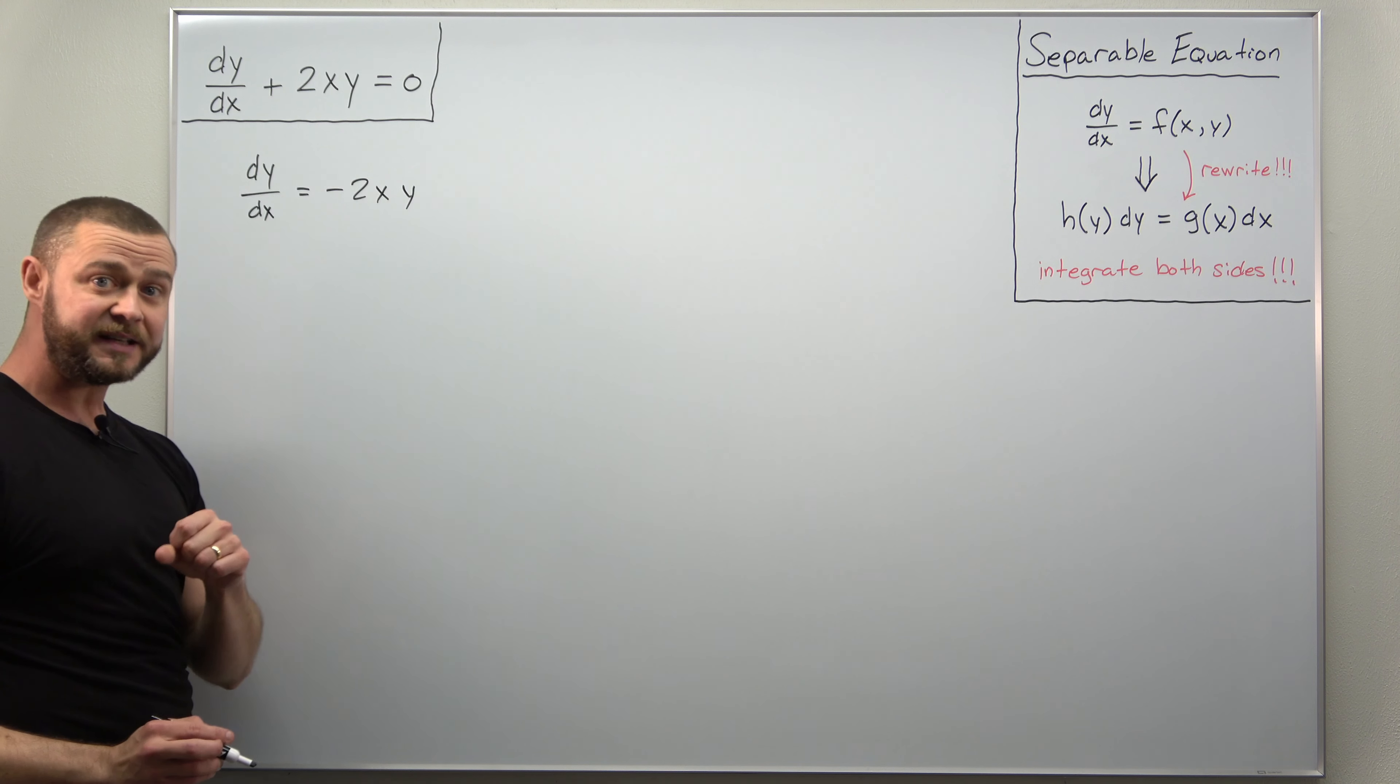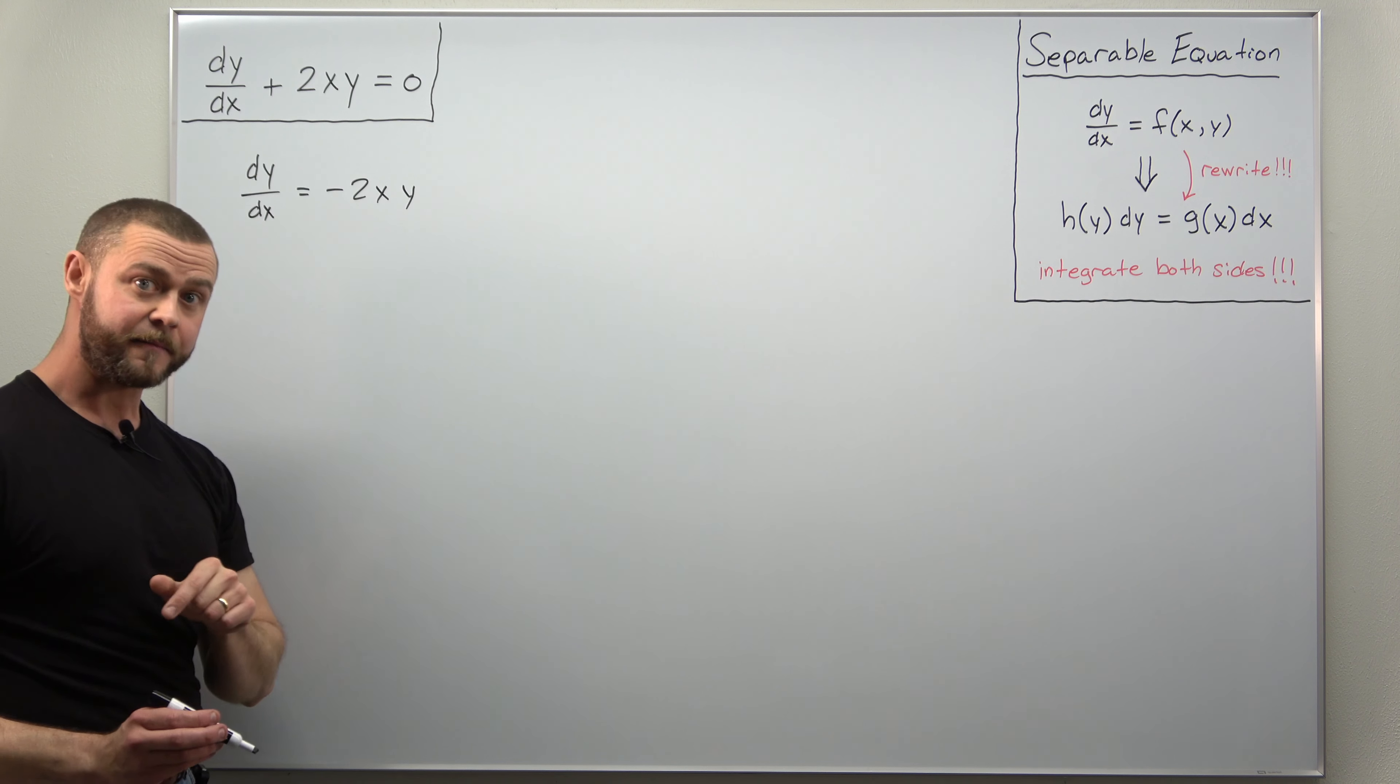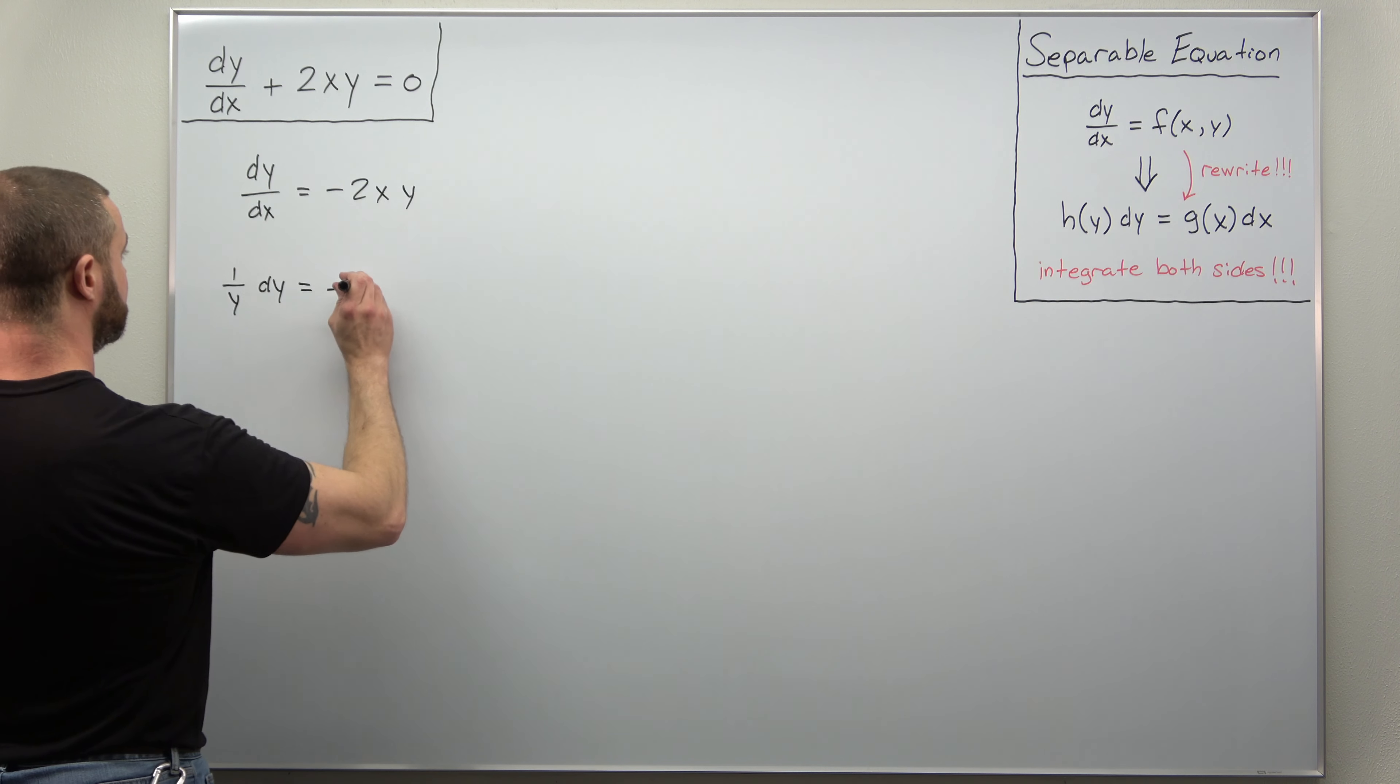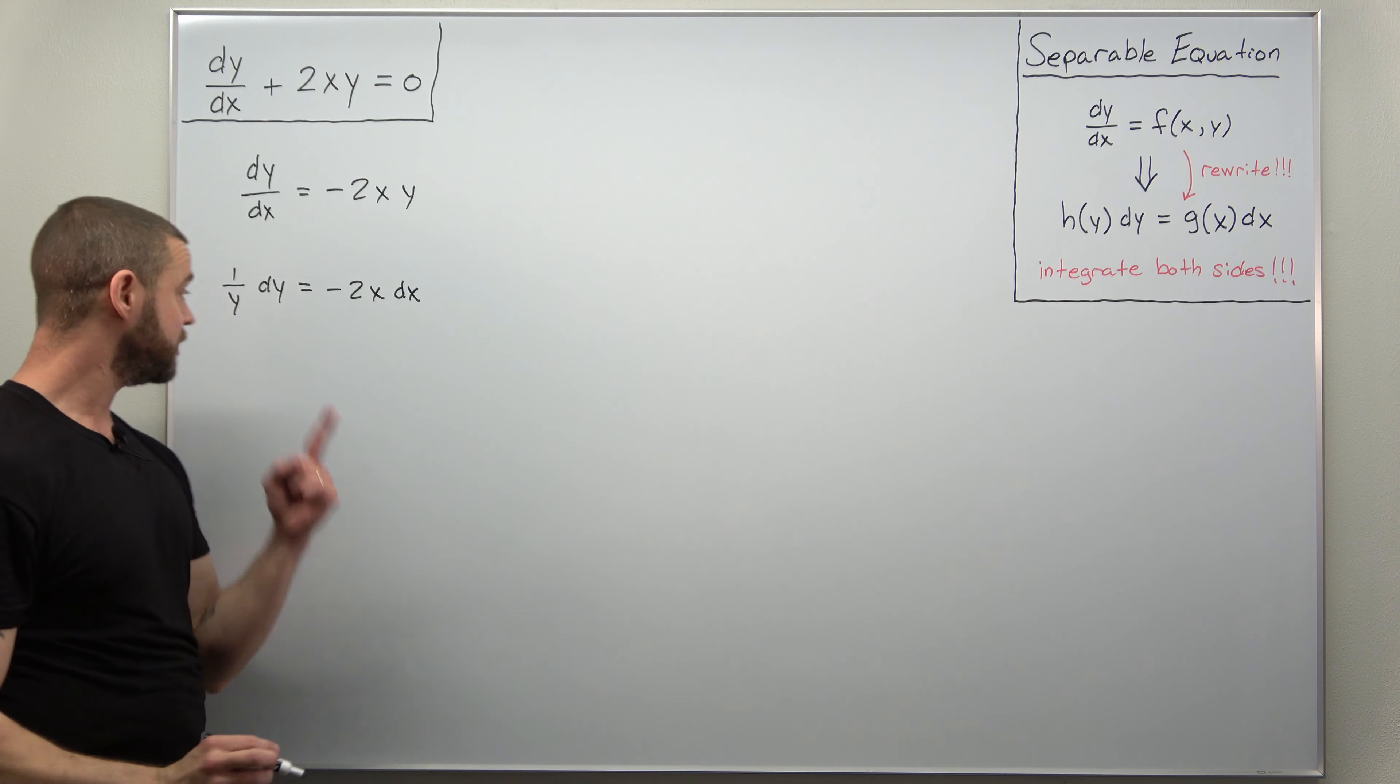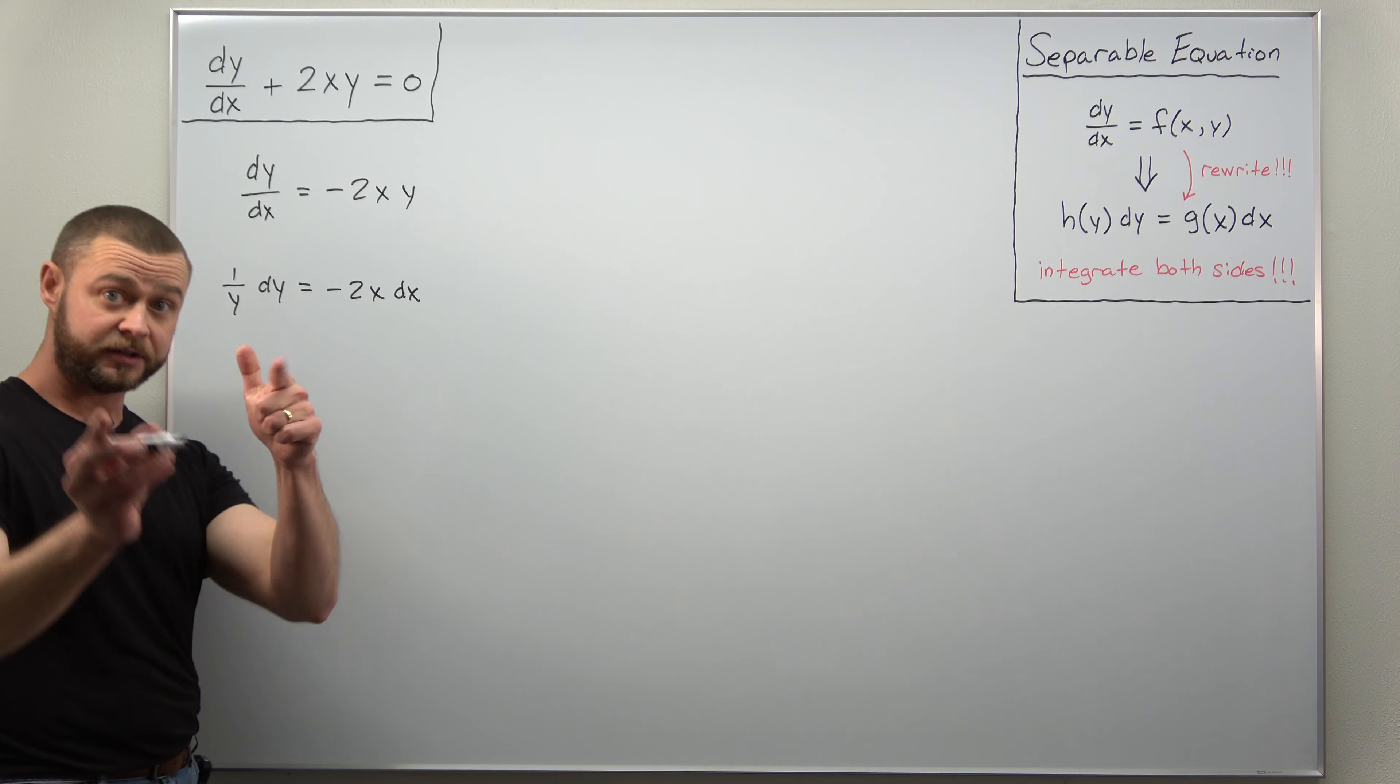I'm going to multiply both sides by dx and then at the same time I'll divide by y. And what we get is 1 over y dy equals negative 2x dx and this is now properly separated. A function of y times dy equals a function of x times dx.